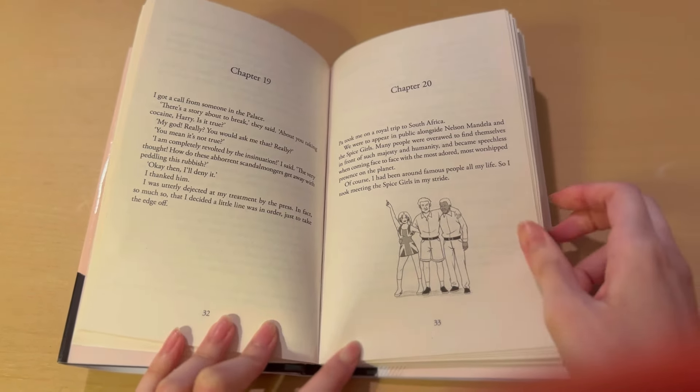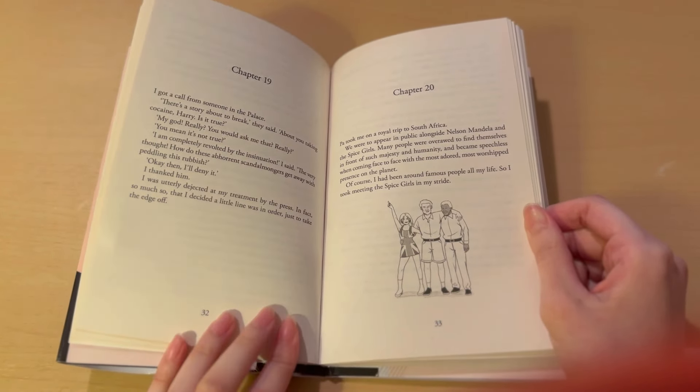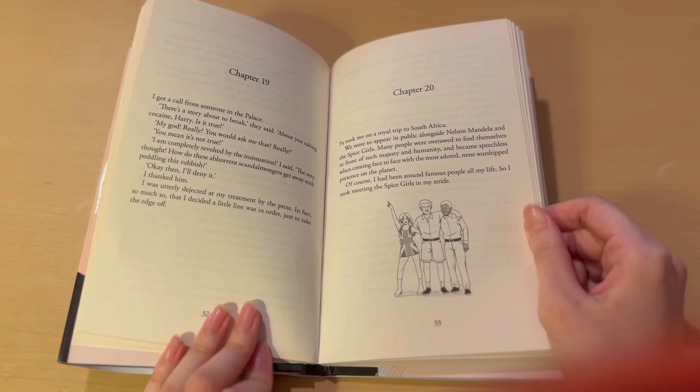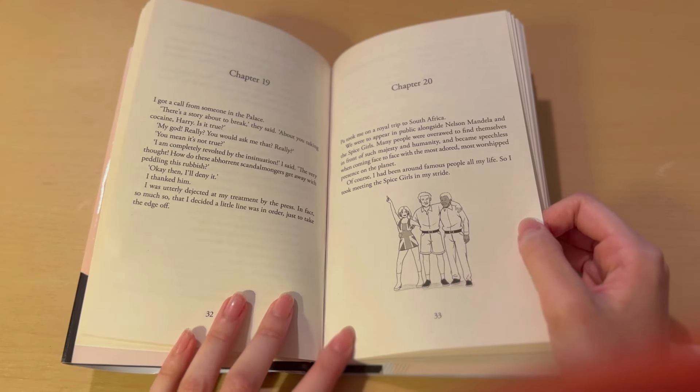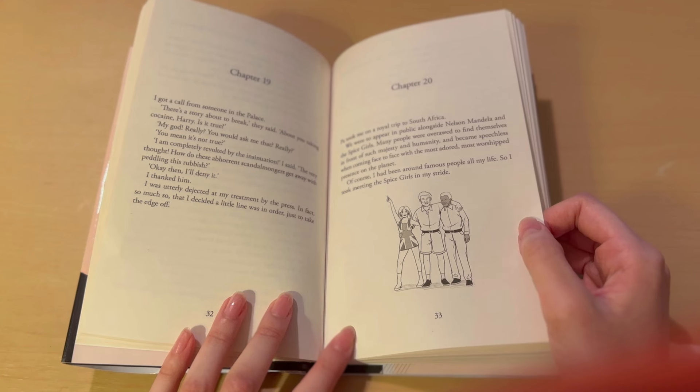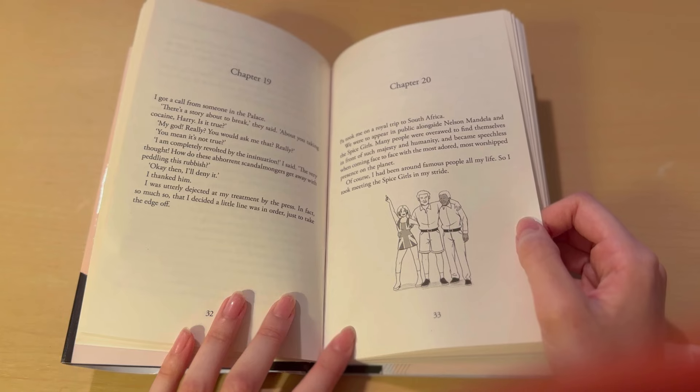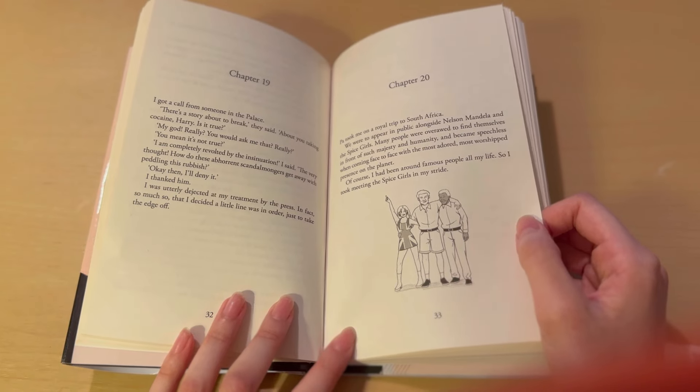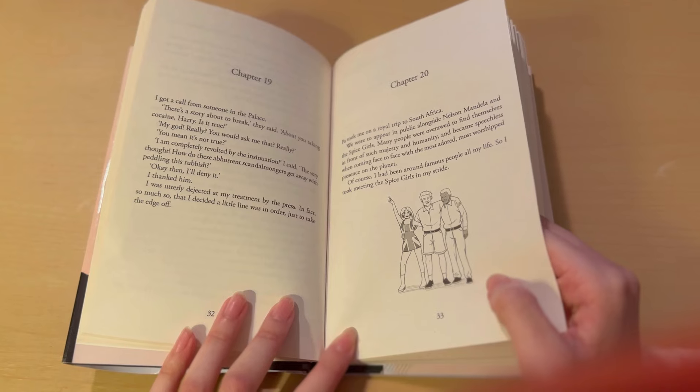Chapter 20. Pa took me on a royal trip to South Africa. We were to appear in public alongside Nelson Mandela and the Spice Girls. Many people were overawed to find themselves in front of such majesty and humanity and became speechless when coming face to face with the most adored, most worshipped presence on the planet. Of course, I had been around famous people all my life. So I took meeting the Spice Girls in my stride. Sure you did, Harry.